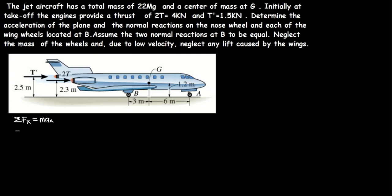From the question, we know T prime equals 1.5 kilonewtons, which is equal to 1500 newtons — multiply by 10 to the power 3. And we have 2T equal to 4 kilonewtons, which is the same as 4000 newtons. We have 2T because the plane has two engines on the back wings, each with the same thrust T, so together they give 2T equals 4000 newtons. There is also one engine at the tail of the plane.